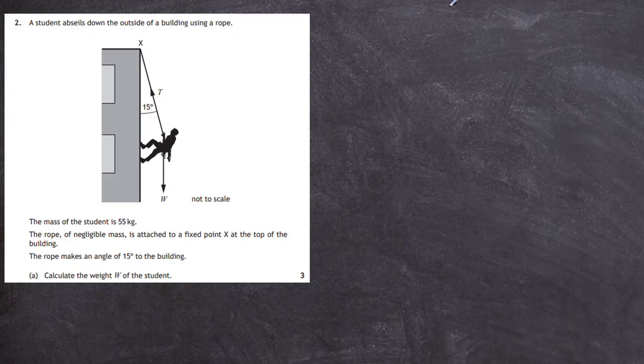The mass of the student is 55 kg and the rope of negligible mass, which means you can forget about the mass of the rope, is attached to a fixed point X at the top of the building. The rope makes an angle of 15 degrees to the building itself.